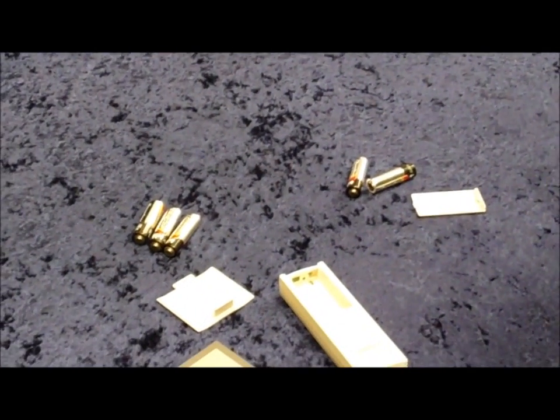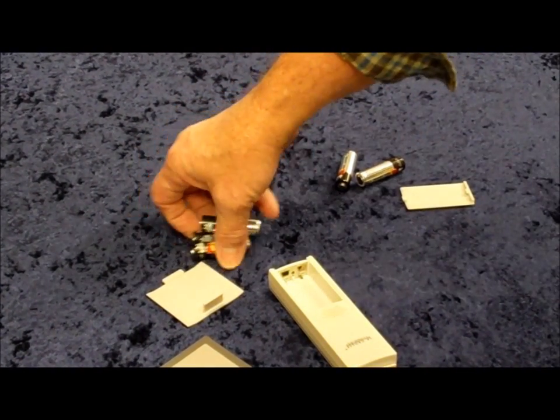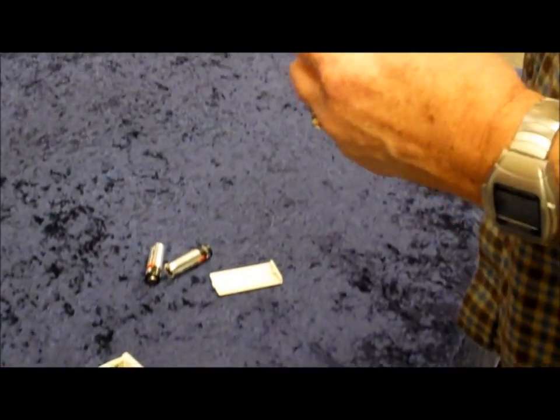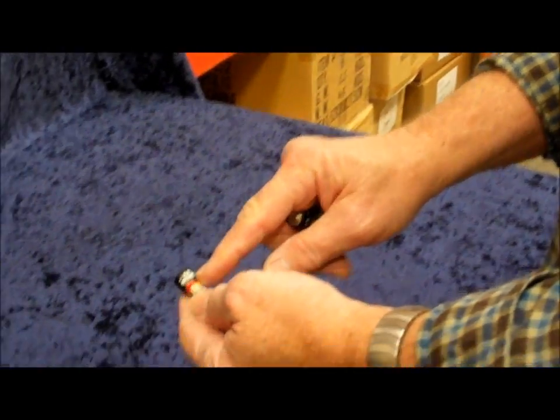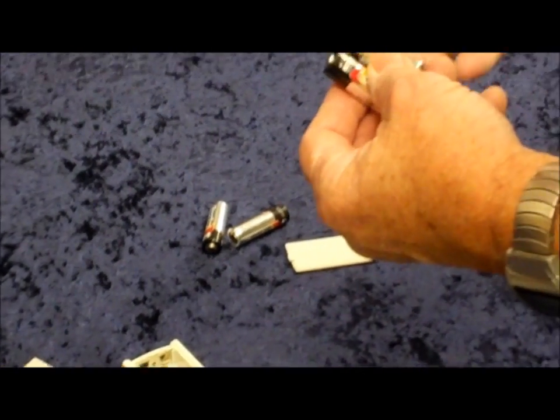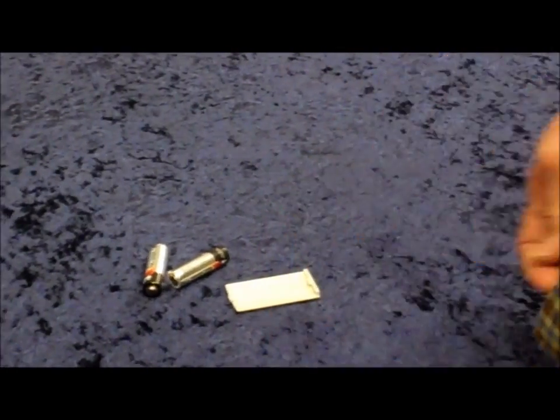Next, making sure you're using fresh alkaline batteries, brand name if possible. Look on the battery too and make sure that the expiration date is 2017 or 2018 as of 2011. They always go seven years in advance.